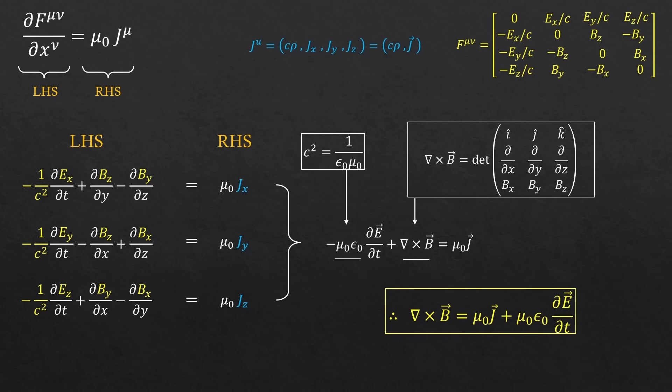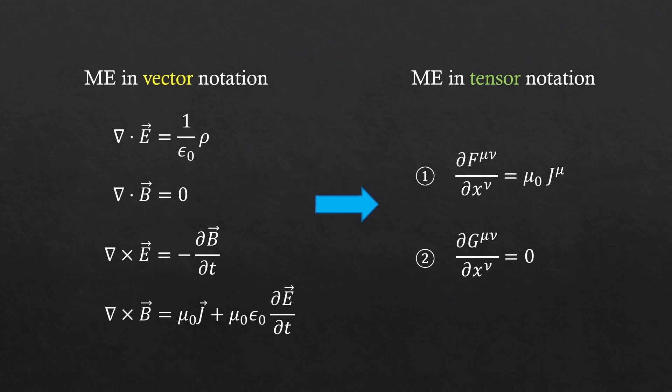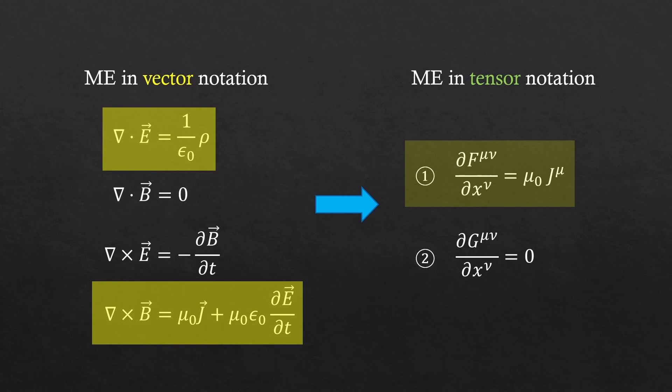So, we have just obtained the following expression, which is precisely the fourth Maxwell's equation, which is also called Ampere's law. So, this first equation in tensor notation was the first and fourth Maxwell's equations combined.